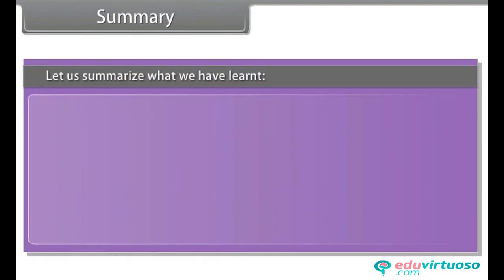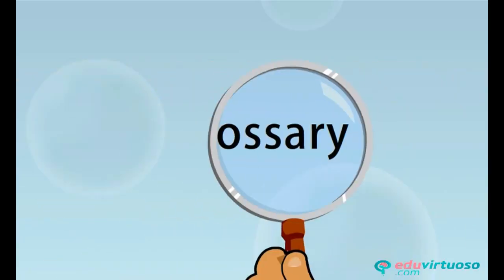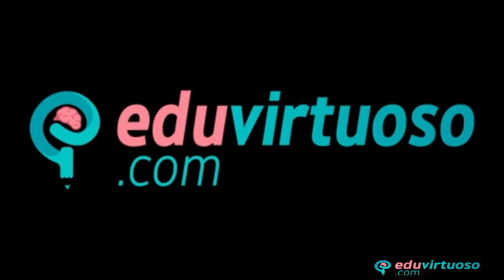Summary. Let us summarize what we have learnt. An event for an experiment is the collection of some outcomes of the experiment. The empirical or experimental probability P(E) of an event E is given by P(E) equals number of trials in which E has happened upon total number of trials. The sum of all the probabilities is one.